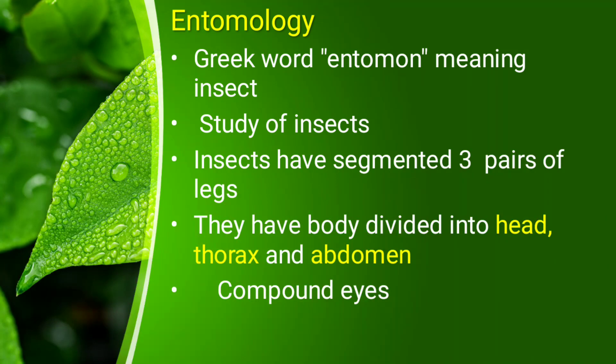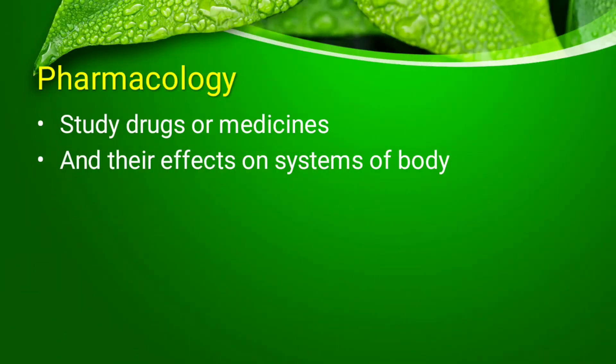The next branch is entomology. 'Entomon' is a Greek word which means insect, so entomology is the study of insects. Insects such as bees have specific characters: three pairs of legs — six legs total — and their body is divided into head, thorax, and abdomen. They also have compound eyes, which means their eyes are made of many small units.